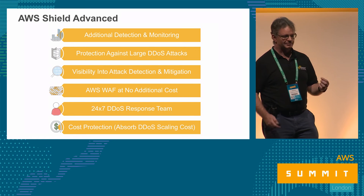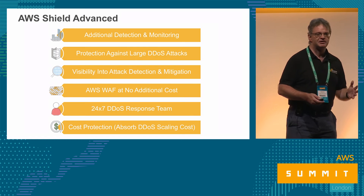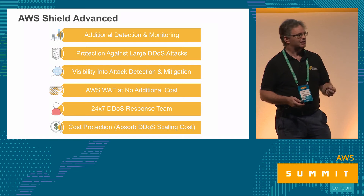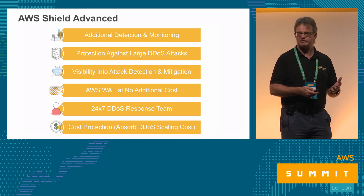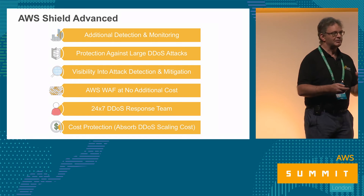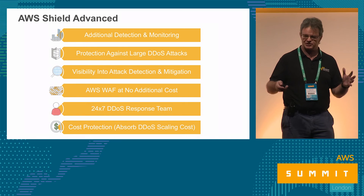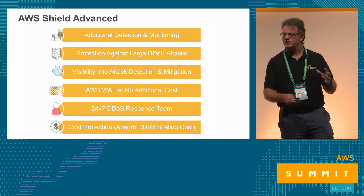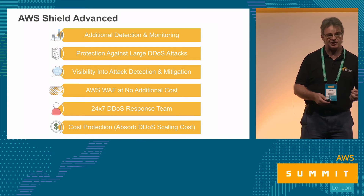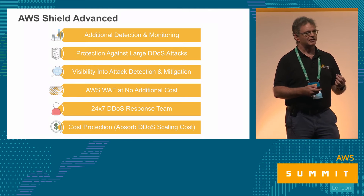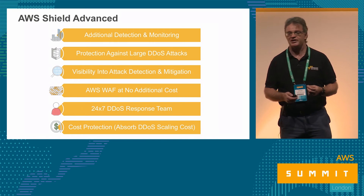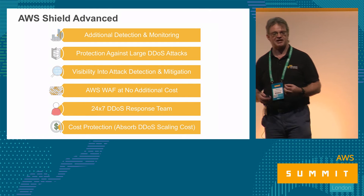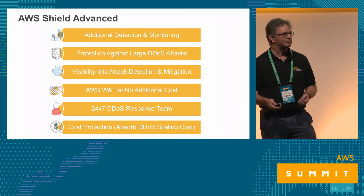The last benefit is cost protection. With DDoS attacks you'll get increased traffic — more CloudFront requests, more WAF rule triggers, more scaling on ALBs and ELBs, and more Route 53 DNS queries — all of which cost money. If you incur any of those costs while on Shield Advanced and it turns out those costs were the result of a DDoS attack, support just refunds all that money. So with Shield Advanced, DDoS is no longer a financial attack vector — all costs incurred get refunded as part of your monthly billing.